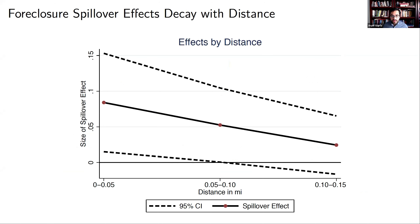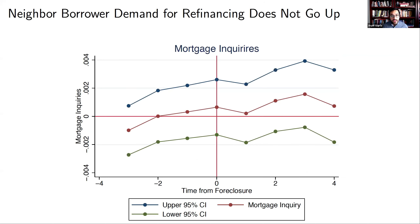If you aggregate up within the whole neighborhood area, we find that each foreclosure causes an additional 0.45 foreclosures in the neighboring area. There's a contagion knock-on effect by which foreclosures affect the default propensities of other people in the vicinity. This effect steadily decays with distance, suggesting this really is a very hyper-local effect. When we look at what other behaviors those neighbors are doing, the demand for refinancing — measured by mortgage inquiries — is not going up, just remaining basically flat.